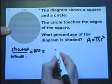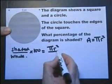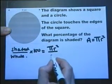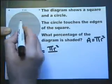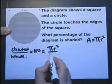And the area of a circle is pi r squared. So the shaded part is the area of the circle, and the whole thing is the area of the square. This is 6 centimeters, so the area of the square is 6 by 6.